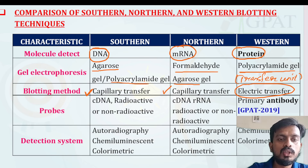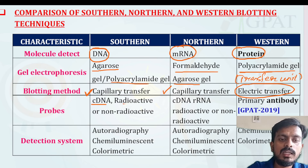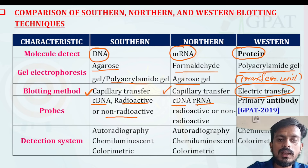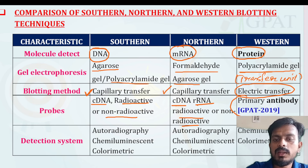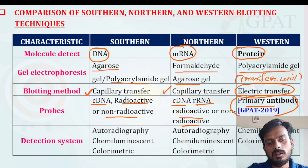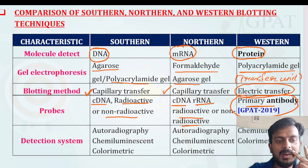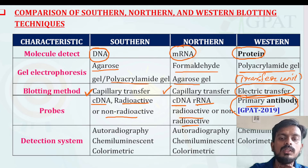Regarding probes, southern blotting uses cDNA probes — radioactive or non-radioactive. Northern blotting uses cDNA and rRNA probes — radioactive or non-radioactive. In case of western blotting, primary antibodies are used instead of probes.